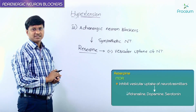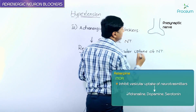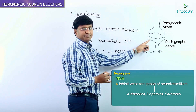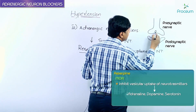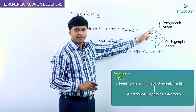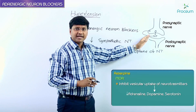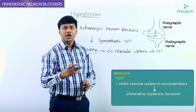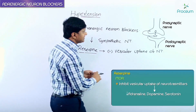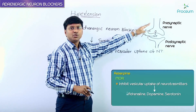The synaptic vesicles are present in the presynaptic nerve. From the synaptic vesicles, the neurotransmitter is released. Normally, some of the neurotransmitter is reuptaken by the synaptic vesicles and then released again to act on the postsynaptic junction. What reserpine does is inhibit this vesicular uptake, reducing the quantity of neurotransmitter in the synaptic vesicles.